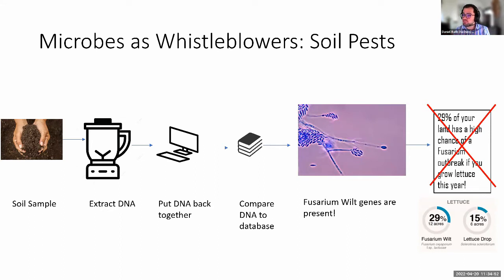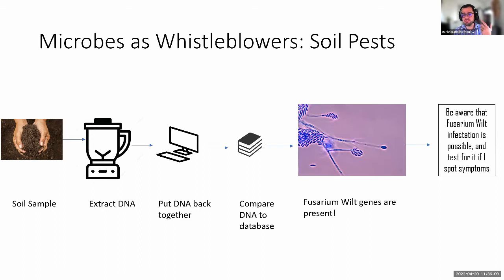Oh no — I have fusarium wilt genes in my metagenome. Does this mean 29% of my land has a high chance of a fusarium outbreak if I grow lettuce this year? Well, what the data really says is that 29% of your land has a high incidence of fusarium wilt genes — but that does not mean you're going to have a high chance of a fusarium wilt outbreak. DNA is potential, and there's a large gap between the potential of DNA being translated into action, its interactions with other microbes in the soil, and its interactions with environmental conditions. A much more reasonable interpretation is: a fusarium wilt infestation is possible, and if I spot symptoms, I should definitely test for it.